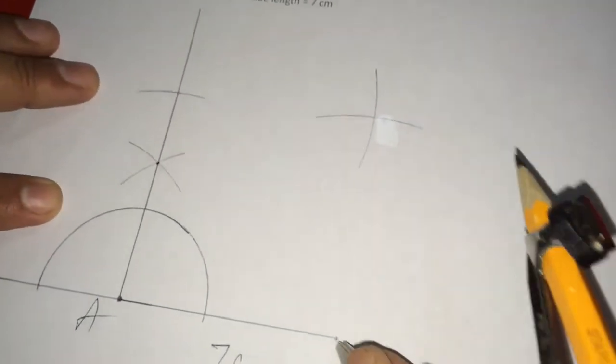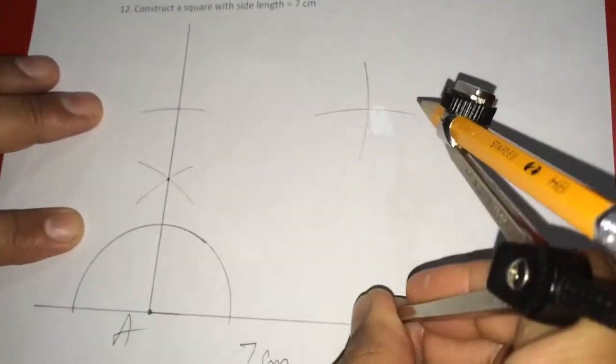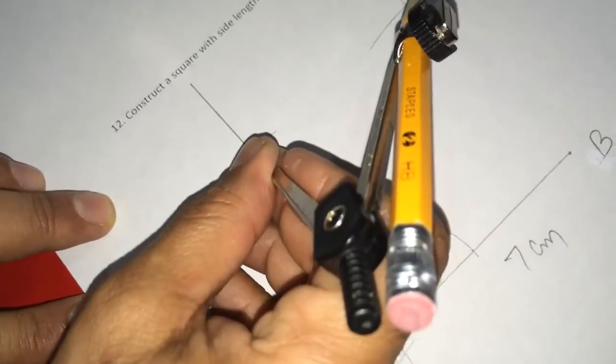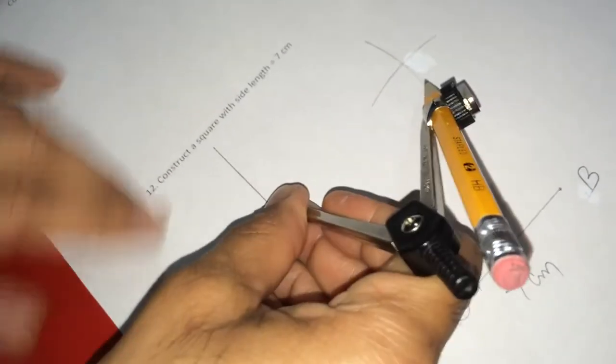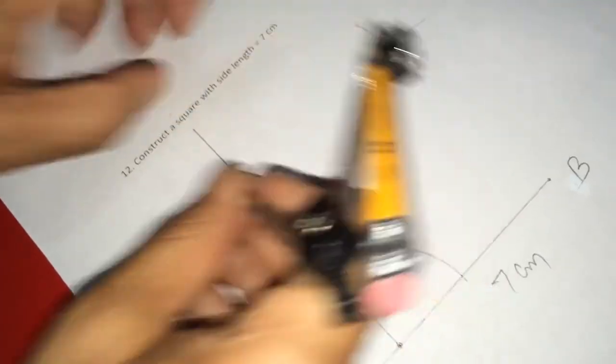See, by taking AB as radius, first, I constructed one arc like this. And the second one with B as center like this. And third one with this point as center, I am drawing, so that it is cutting this previous arc here.